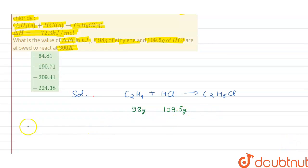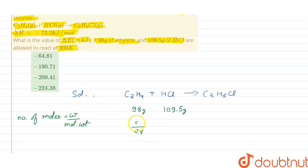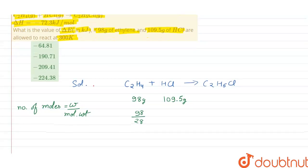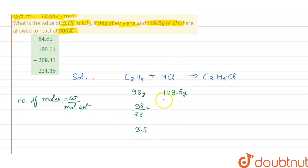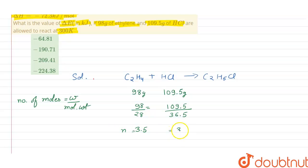By using these weights we can calculate the number of moles, using the formula: moles = weight divided by molecular weight. The molecular weight of ethylene is 28, so moles of ethylene = 98 / 28 = 3.5 moles. For HCl, weight is 109.5 divided by molecular weight 36.5, giving us 3 moles of HCl.